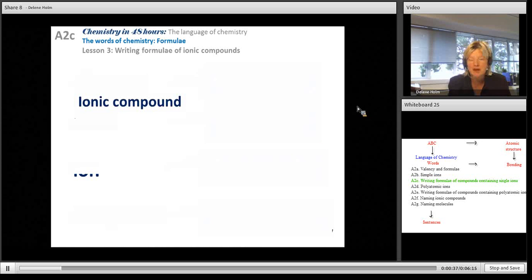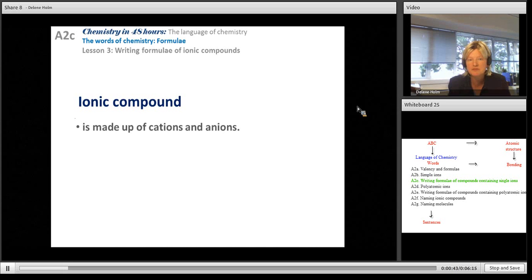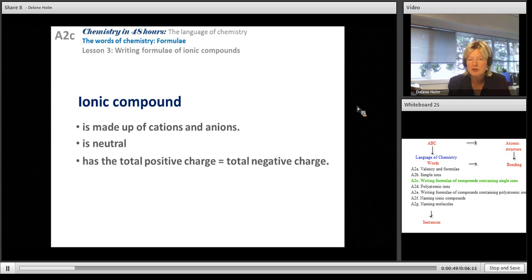An ionic compound is when the compound is made up of two or more elements in the form of ions, so cations and anions. Overall an ionic compound has to be neutral. The total positive charge must equal the total negative charge.